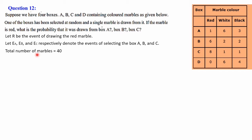Now, total number of marbles: altogether in the boxes there are 40 marbles when you add all of them — 1 plus 6 plus 3 gives 10, then 6 plus 4 is 10, 8 plus 2 is 10, and 6 plus 4 is 10 — four rows, so total 40 marbles. Number of red marbles: 6 plus 1 is 7, plus 8 is 15. So the number of red marbles is 15.